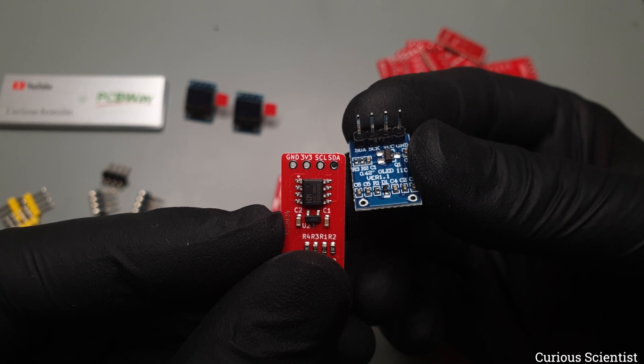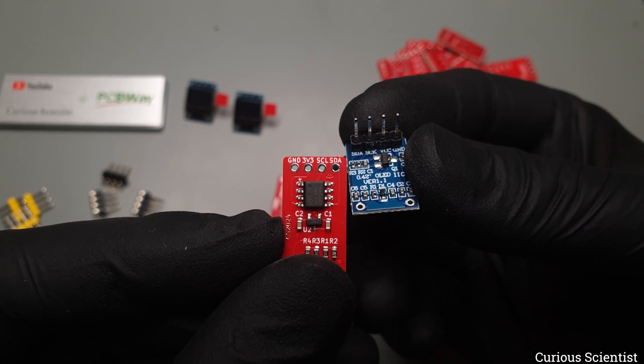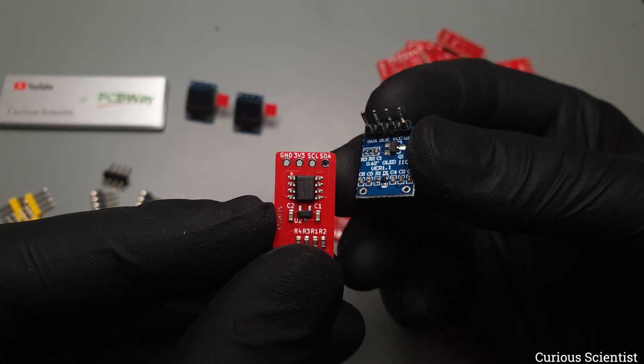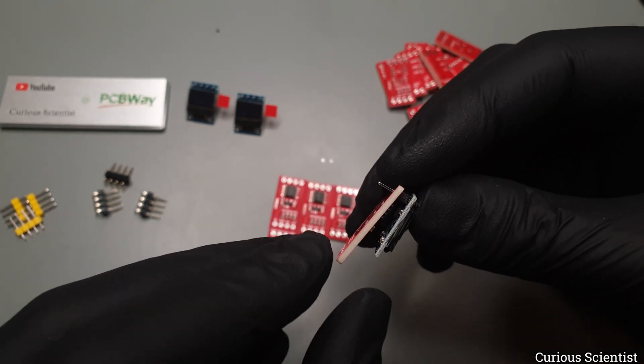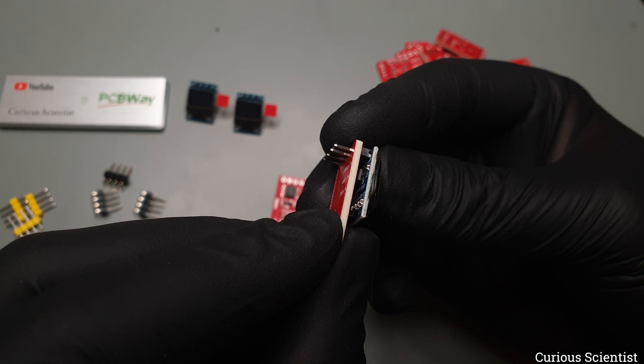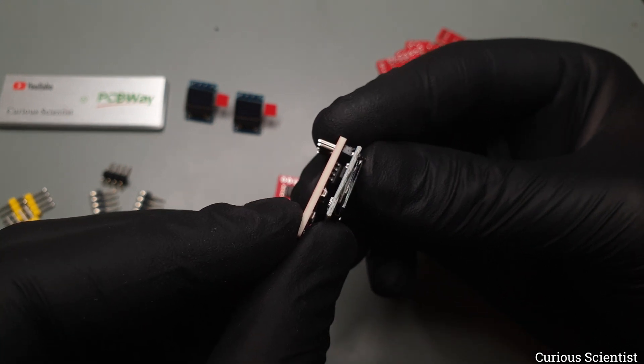It is a 0.42 inch OLED display. I actually designed the circuit for this specific display, so that's how the width of the PCB ended up being 12 millimeters. It is the width of the OLED display's circuit board. As you can see, it fits the PCB nicely.